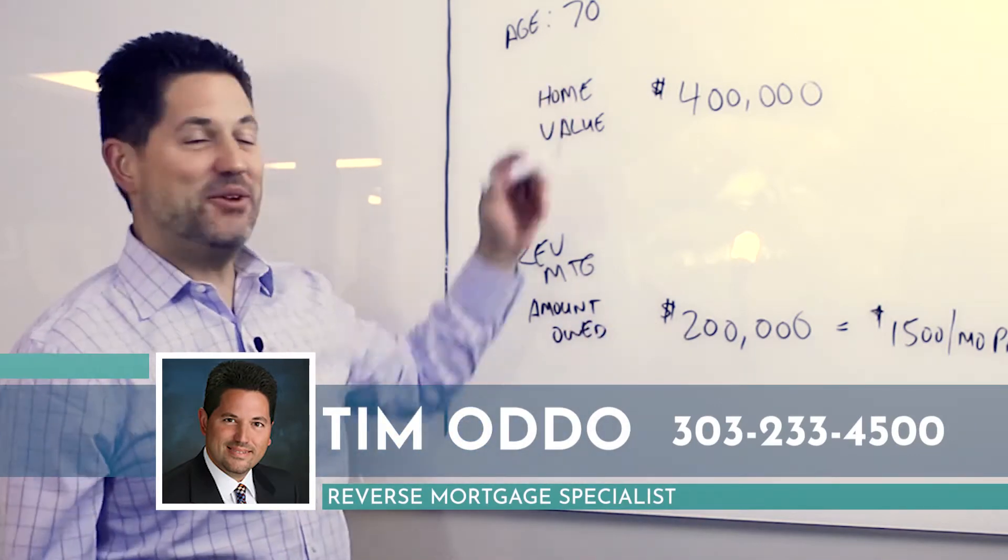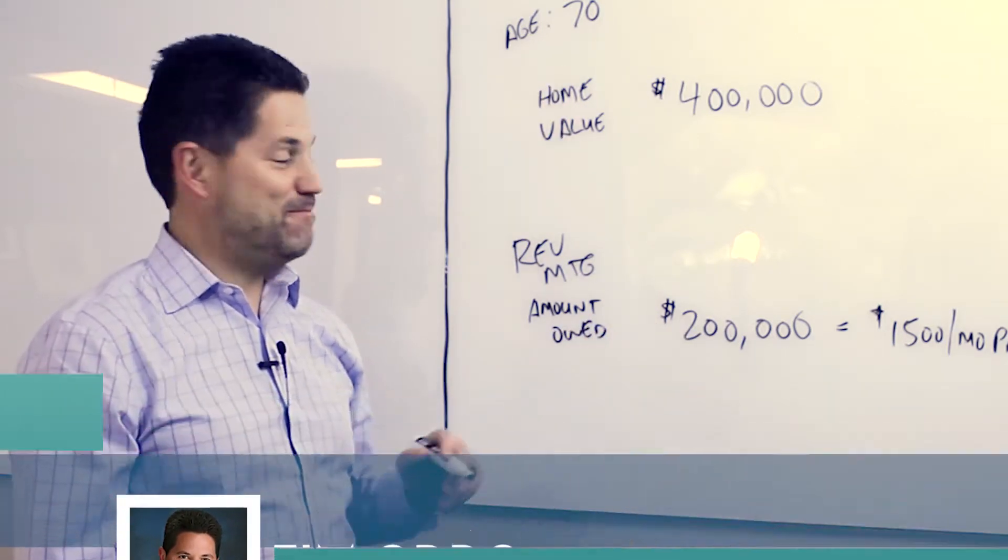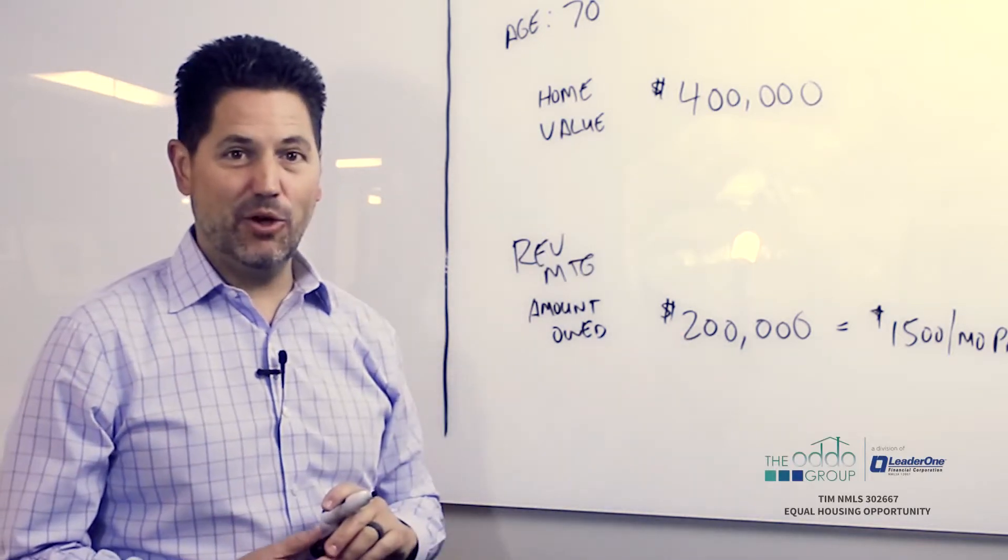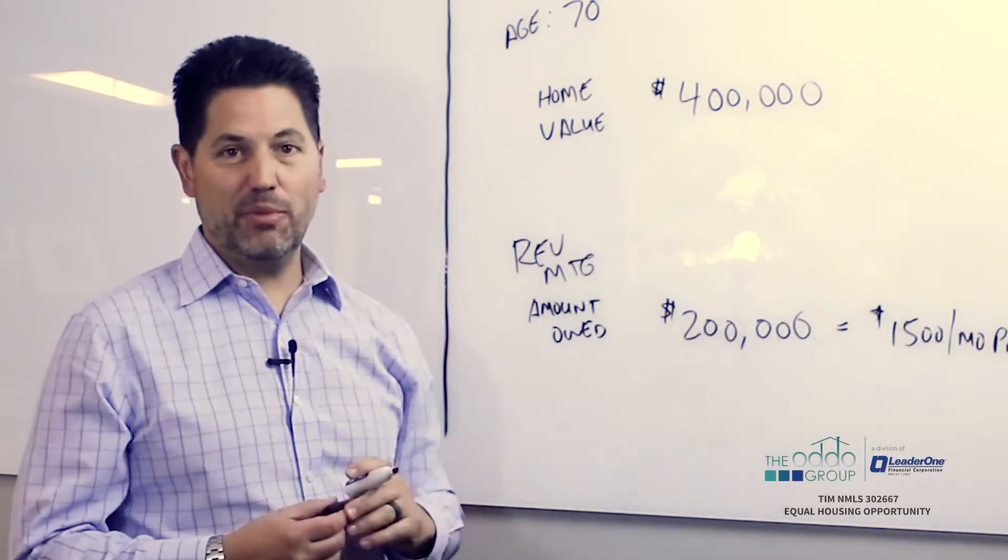In a reverse mortgage, let's pretend you have a 70-year-old client and they own a home that's worth $400,000 and they owe approximately $200,000 on the loan and they have a $1,500 a month mortgage payment.